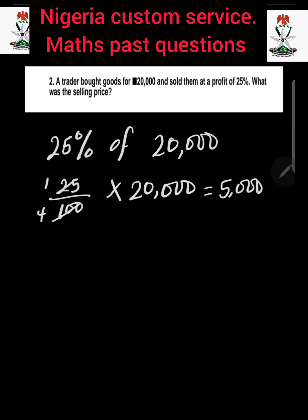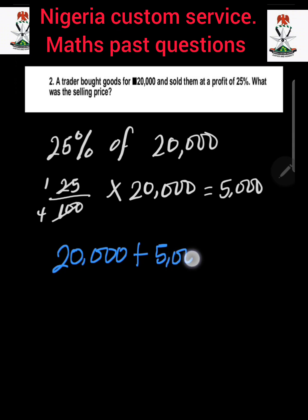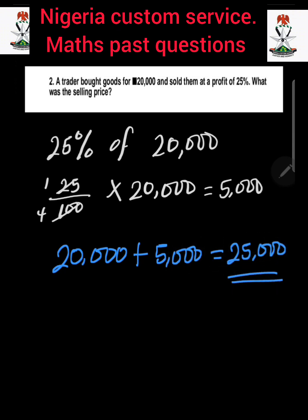To get the selling price, it is going to be the actual money plus the 25% profit. The actual money is 20,000, then we add the profit of 5,000. So the selling price is going to be 25,000 naira. That is how to answer question number 2.